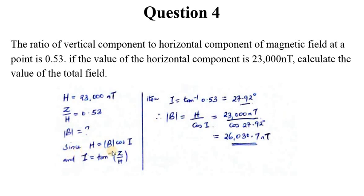We have some relations here which we need to use. We know that H = B cos i, and this i is the inclination angle. This angle can be obtained by the arctan of Z/H. So we have Z/H already as 0.53, so that means i can be obtained. So tan inverse of that gives us 27.92 degrees.